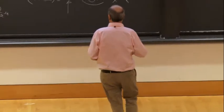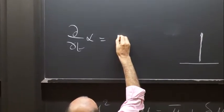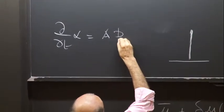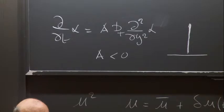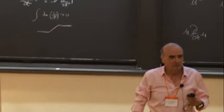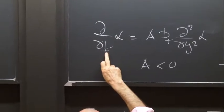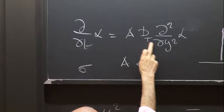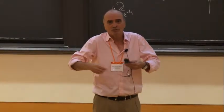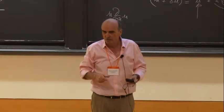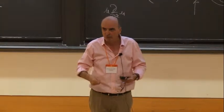So if you have an equation like d_t alpha equals a coefficient a times d²/dy² alpha, and if a becomes negative, this is going to be strongly unstable. To see that, you take sigma equal to minus a k-squared — and if a is negative, you get a positive k-squared term. It's just the opposite: a diffusion equation is stabilizing if the diffusion coefficient is positive, and unstable if the diffusion coefficient is negative.